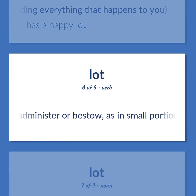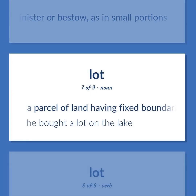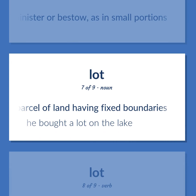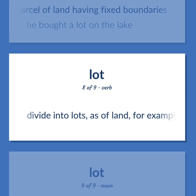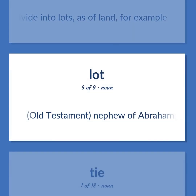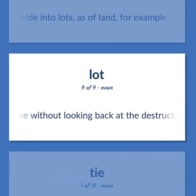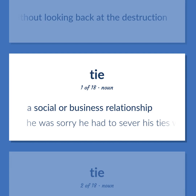Administer or bestow, as in small portions. A parcel of land having fixed boundaries. He bought a lot on the lake. Divide into lots, as of land, for example. Old Testament: Nephew of Abraham. God destroyed Sodom and Gomorrah but chose to spare Lot and his family, who were told to flee without looking back at the destruction.